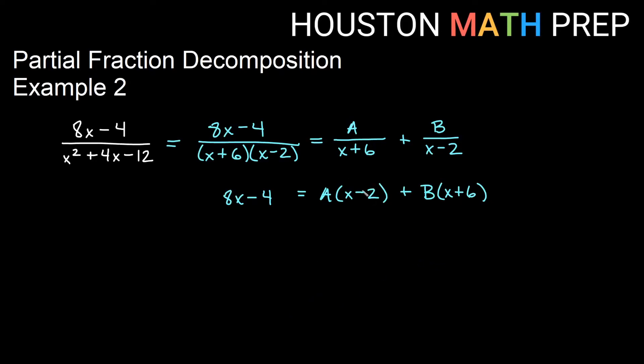And now we have values for x that we can plug in to set each factor equal to 0. This one here next to A, if I plug in 2, that will give me 0 for this factor. That will make some things disappear and help us solve for the other one. So I get 8 times 2, that's 16, minus 4, equals A times 0, plus B times 2 plus 6, which would be 8 there.